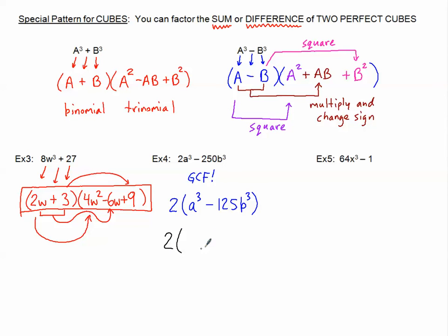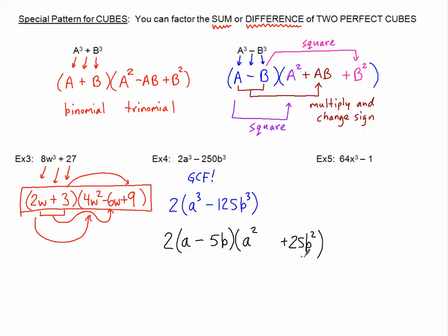Don't forget about the 2. This will factor into a binomial times a trinomial. I left the 2 outside. I take the cube root of a cubed, which is a. The cube root of 125 is 5. The cube root of b cubed is b. And I keep the same sign. I take the first piece, a, and square it to get a squared. I take the last piece, 5b, and square it to get 25b squared — always positive because I'm squaring. Then I take these two pieces and multiply them together: 5ab, but I change the sign to positive. So there's a GCF to begin, and then it's your difference of two perfect cubes.